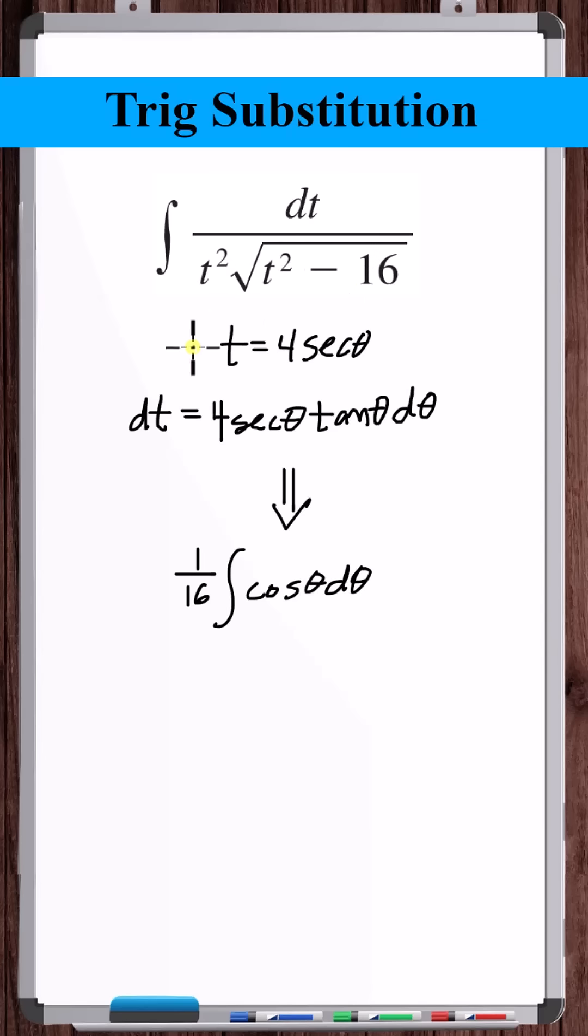So we made a trig substitution, t equals 4 secant theta, simplified, and got this integral. So now if we solve this integral, we need to convert back to the original variable t. How do we do that?